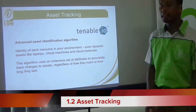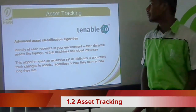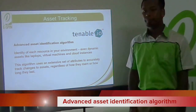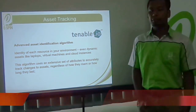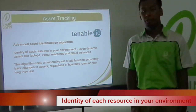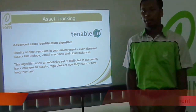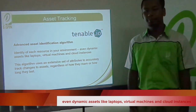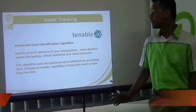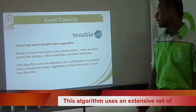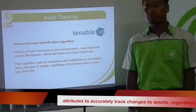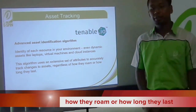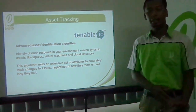Asset tracking: Tenable.io has an advanced asset identification algorithm to identify each resource in the environment, even dynamic assets like cloud instances. This algorithm uses an entire set of attributes to accurately track changes and additions, regardless of how they run or how long they last.